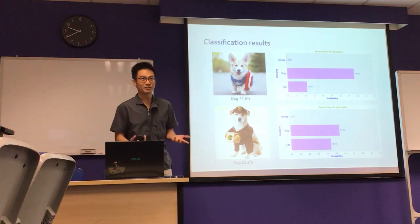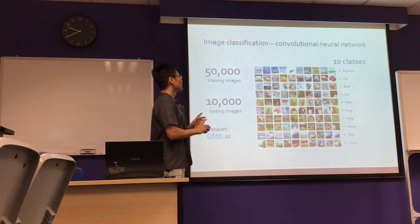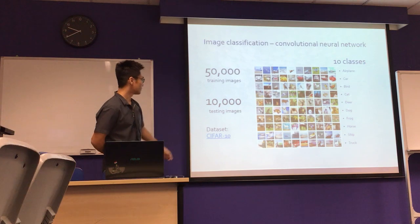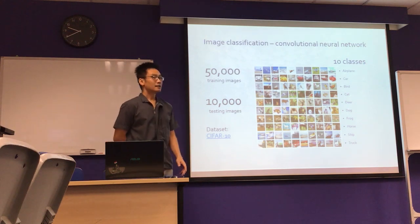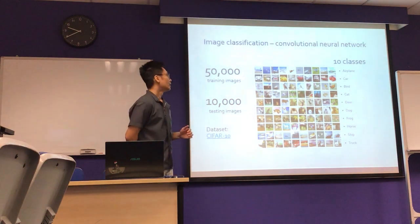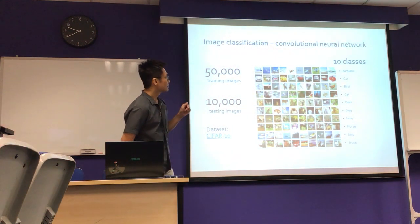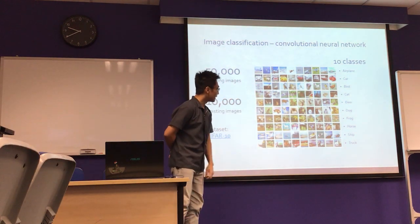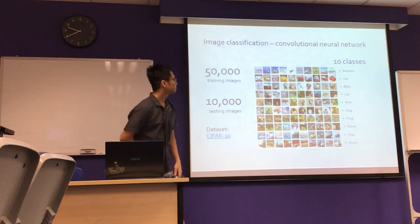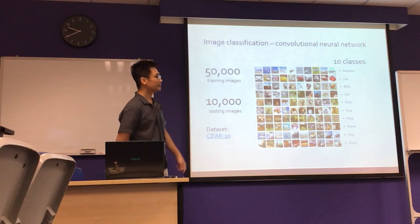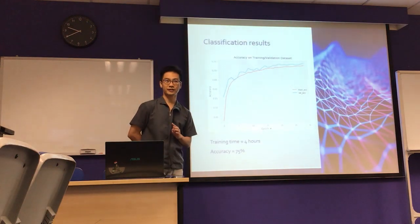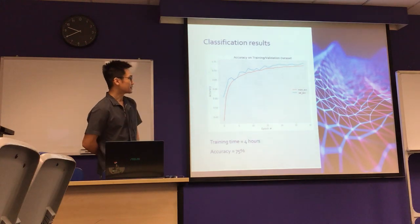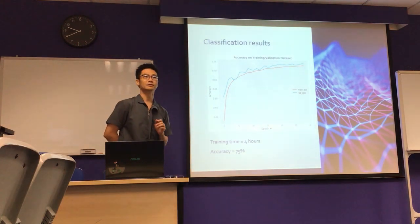CNN stands for Convolutional Neural Network, which I explored using the CIFAR-10 dataset. There are 60,000 images in 10 classes, ranging from airplane, car, bird, and others to ship and truck. Because there are so many images, it took about four hours to train and achieved an accuracy of 75%. I was then ready to test the model.